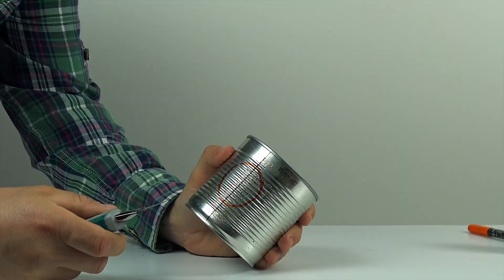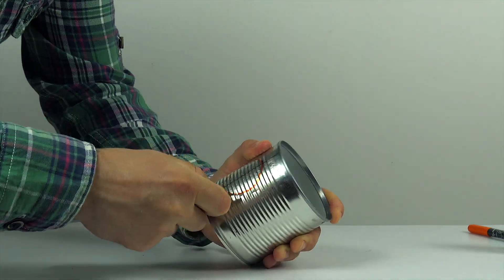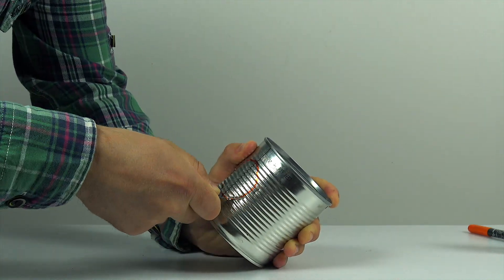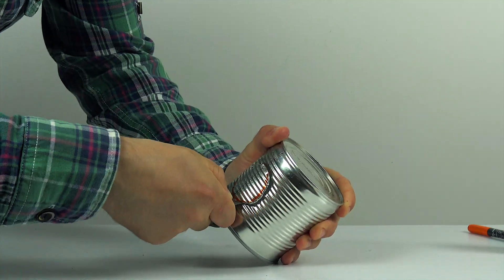We'll need a tin can and a paraffin candle. First, mark the diameter of the candle, then carefully cut out a hole using a knife or any other suitable tool.